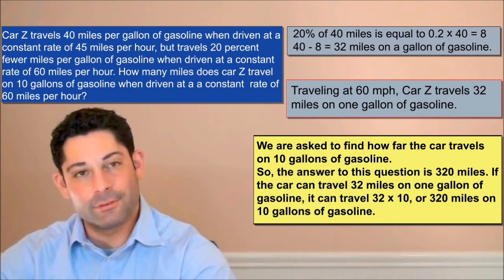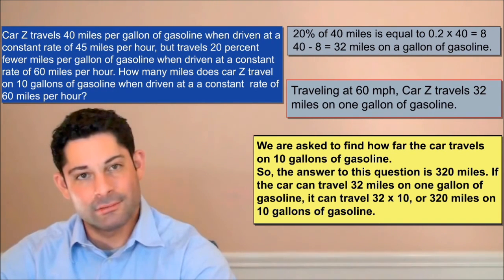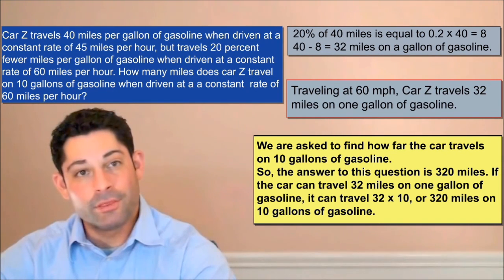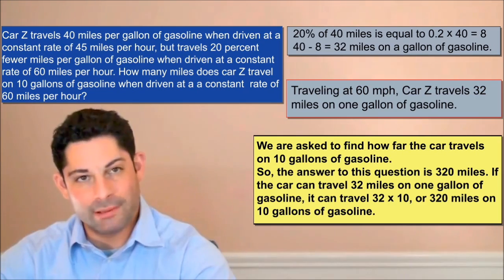So, the answer to this question is 320 miles. If the car can travel 32 miles on one gallon of gasoline, it can travel 32 times 10, or 320 miles on 10 gallons of gasoline.